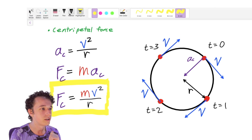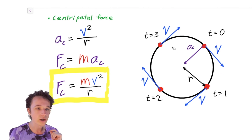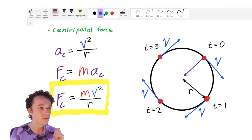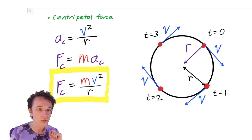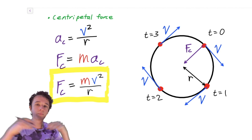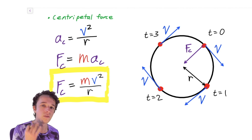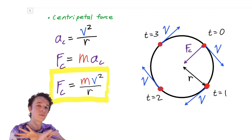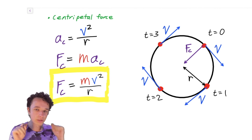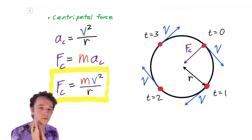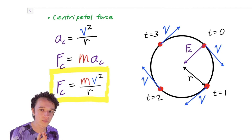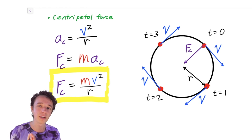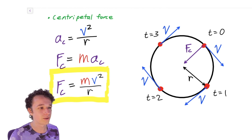This force is in the same direction as the centripetal acceleration, so the centripetal force is also always pointing inwards to the center of the circular path. If you take away anything from this video, let it be F equals mv squared over r — that's going to be drilled into your brain over the next ten months or so.